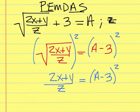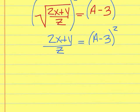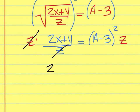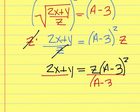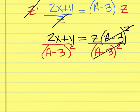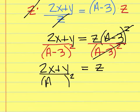We followed the order of operations in reverse by doing subtraction first. But now we have to undo the square root by squaring both sides so we can have access to what's inside. Once you do that, you have to start getting z by itself. We have addition and subtraction on the top, but division in the middle that must be taken care of first. To get rid of z off the bottom, even though that's what we're solving for, we multiply the top and the bottom by z — gone and gone. So you're left with 2x plus y equals z times the quantity squared of a minus 3. To get z by itself, divide both sides by the quantity squared of a minus 3, which cancels, leaving z equals 2x plus y over the quantity squared of a minus 3.